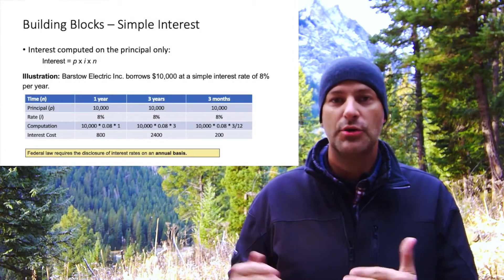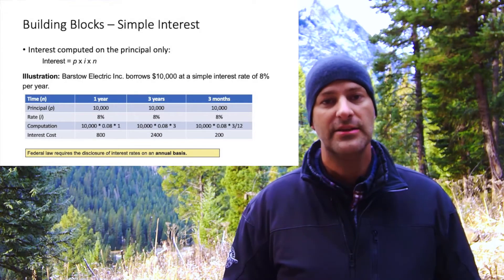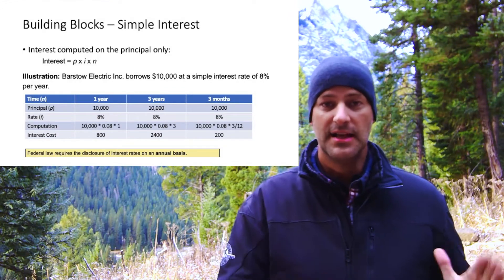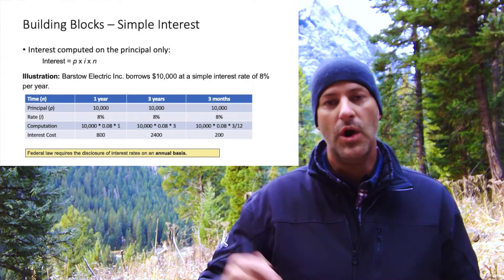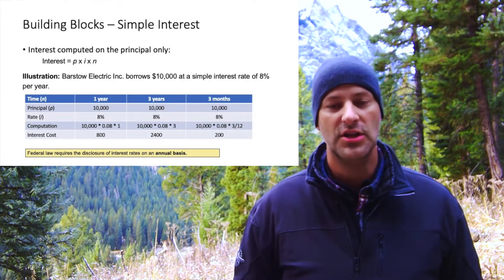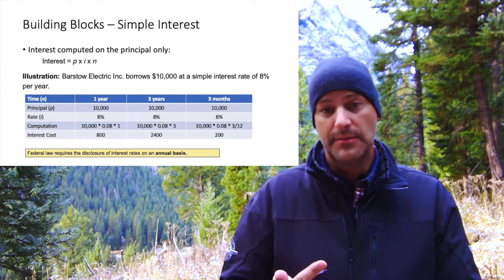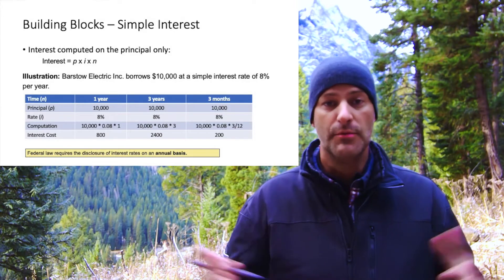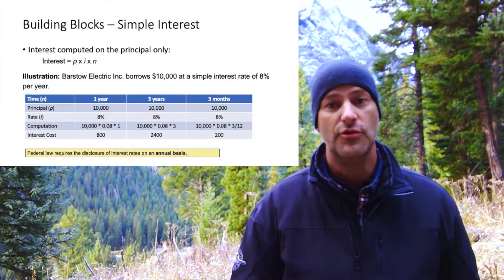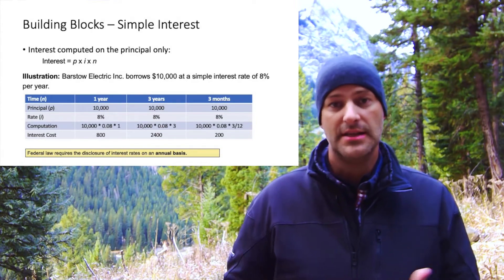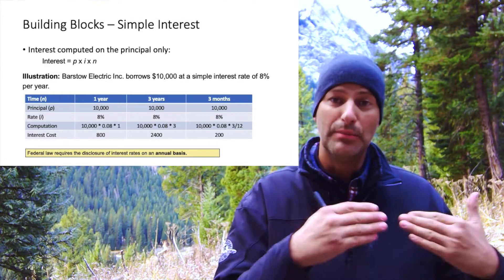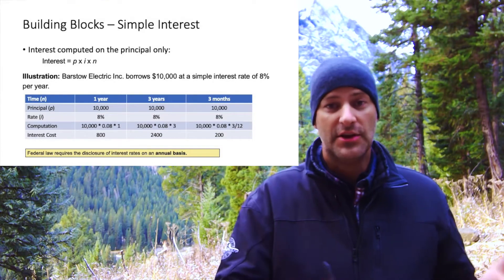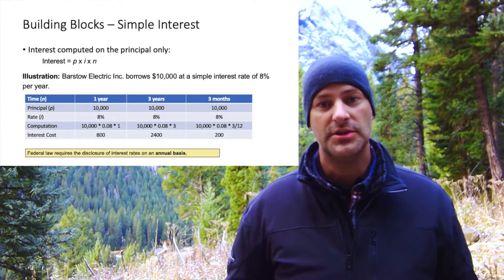At 8% per year, if they're borrowing $10,000, the calculation is $10,000 × 0.08 × 1 year = $800 interest for that year. Now if we extend this to three years — still borrowing $10,000 at 8%, but for three years — under simple interest they're only paying interest on the principal: $10,000 × 0.08 × 3 = $2,400.